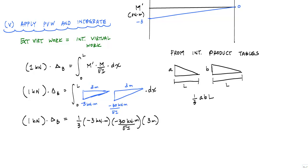If I work that out and cancel out some units, this will be 90 kilonewton meter cubed over EI.